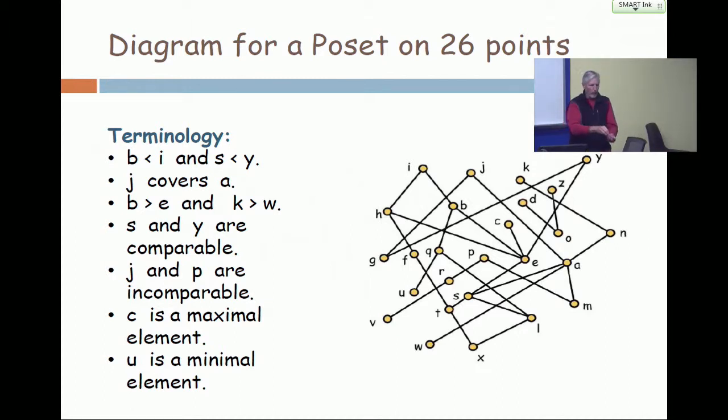Here you would have point one going up to point two, going up to point three, going up to four, and then going up to five. So the cover graph would be just a path on five vertices.